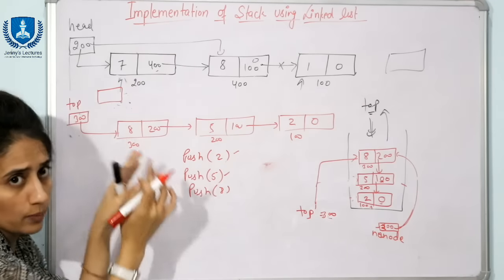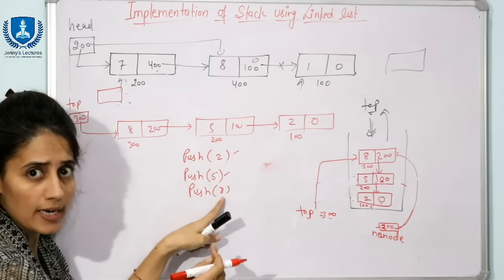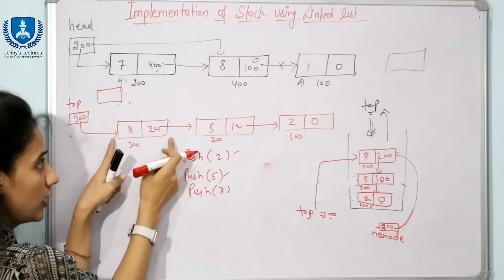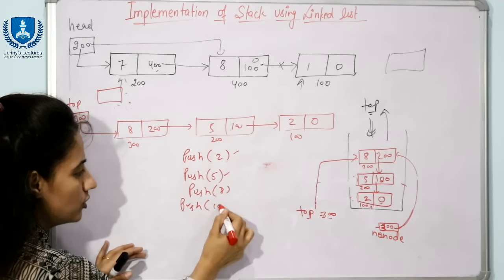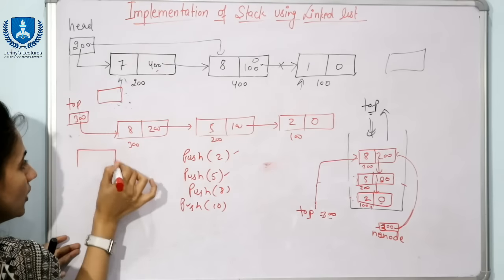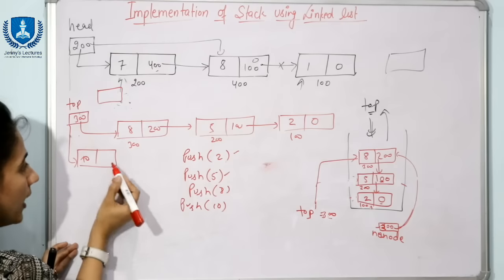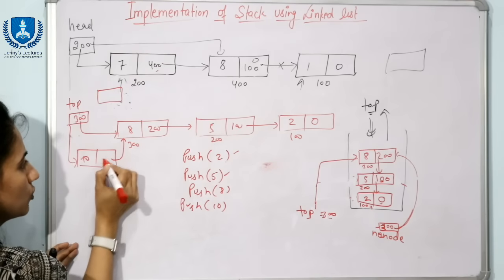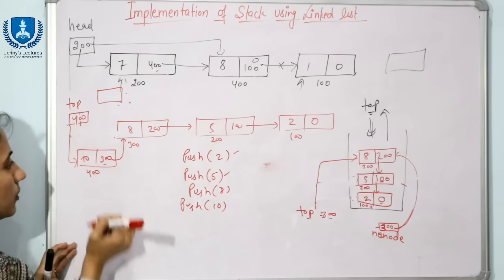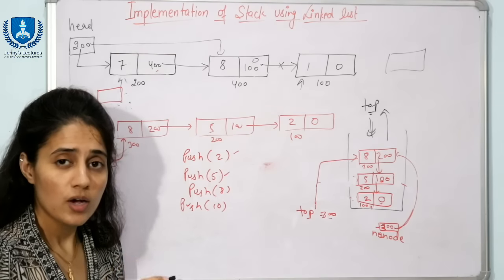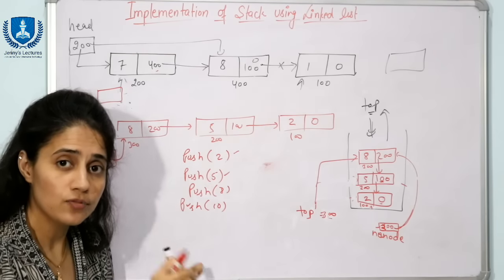Because of the O(1) time complexity requirement, we always insert from the beginning. When we insert 8, it becomes the first node. If we call push(10), a new node with data 10 is created at address 400, its next part stores 300, and top is updated to 400. This is how we implement stack using linked list — always inserting and deleting from one end, which is the beginning.